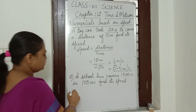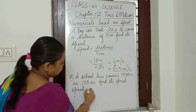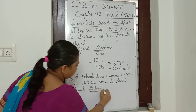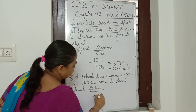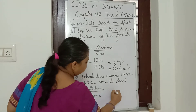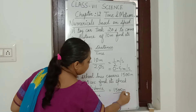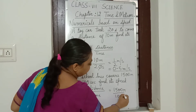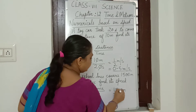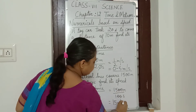So again let us write down the formula: speed is equal to distance upon time. Distance is 1500 meters divided by time, that is 100 seconds. The two zeros cancel out, so we get 15 meter per second.